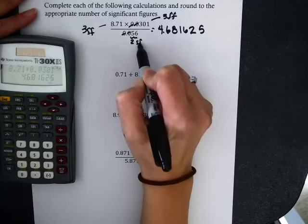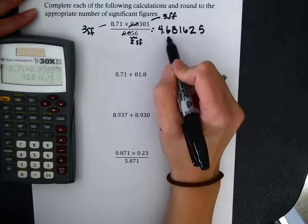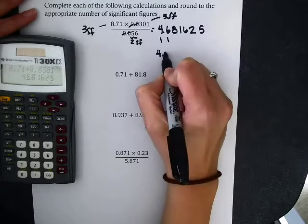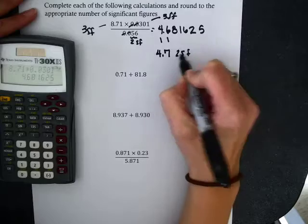Remember, those zeros out in front don't count. So I had 3, 3, and 2, which means my answer should have the minimum of those, which is 2. So round this to 4.7, which is 2 sig figs.